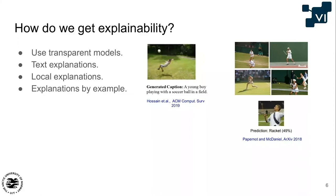The last approach I want to mention is explanations by example. Here, you're not trying to show what in the specific image is important for a prediction, but rather what similar training images influenced the prediction. There's an example where Barack Obama is throwing a football, but the model thinks he's holding a tennis racket. A deep learning nearest-neighbor system shows the most similar objects in the training data — Obama is wearing a white shirt, which is typical in tennis, and has a pose like he's about to hit something with a racket. So it makes sense the model might misunderstand this.